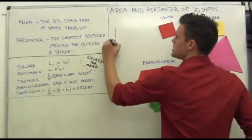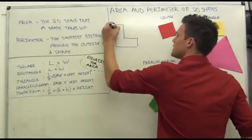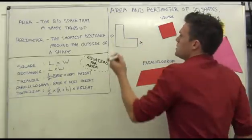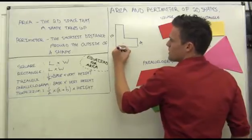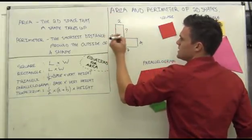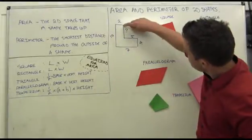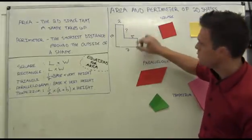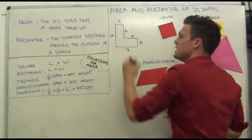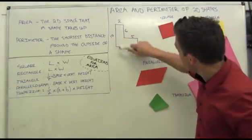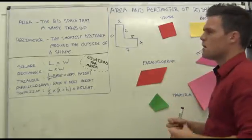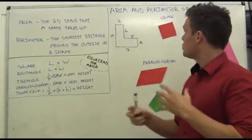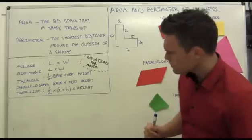Sometimes they'll give you a shape where some measurements are missing. Let's say that's 10, and this here is 4, and they've left out the fact that that's 7 and that's 2, and you don't know what one side is. But you can very easily work it out — because if this whole thing is 10 and this little bit here is 4, you can work out that the missing side is 6. You're trying to find all the sides and add them together; sometimes a question just leaves out a side.